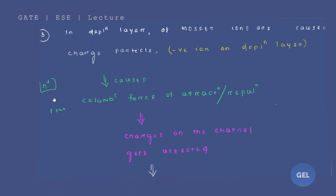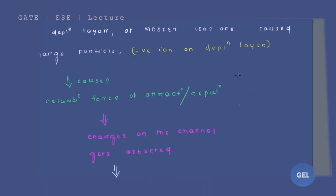And mostly the negative ions influence will be more towards this p substrate side. And due to these negative ions sitting in the depletion layer, there will be a generation of a lot of charged particles. And those charged particles became responsible for the columbic force of attraction or repulsion.